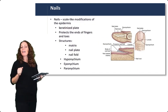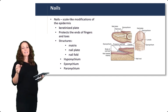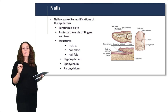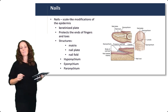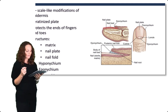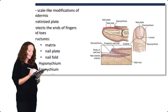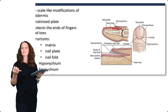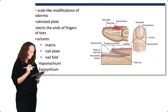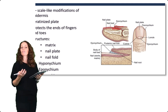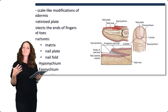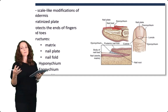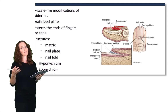Nails are scale-like modifications of the epidermis. They have a keratinized plate — that tough plate that we can feel or paint with nail polish — and they protect the ends of the fingers and toes. The main structures of the nail include the nail plate, which is the majority of the nail structure, produced by the matrix of the nail found more proximally. Just above the nail plate is a layer of skin called the posterior nail fold. These surrounding skin regions are important because infection can affect these areas, and you need to use correct terminology to describe where infections are located.